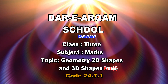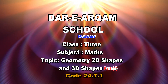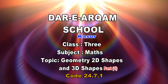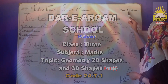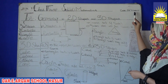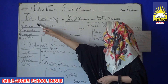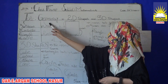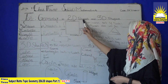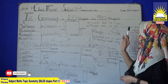Assalamu alaikum. Today I will teach you class 3 subject mathematics, code 24.7.1, part 1. Today we will learn about the topic geometry: 2D shapes and 3D shapes.